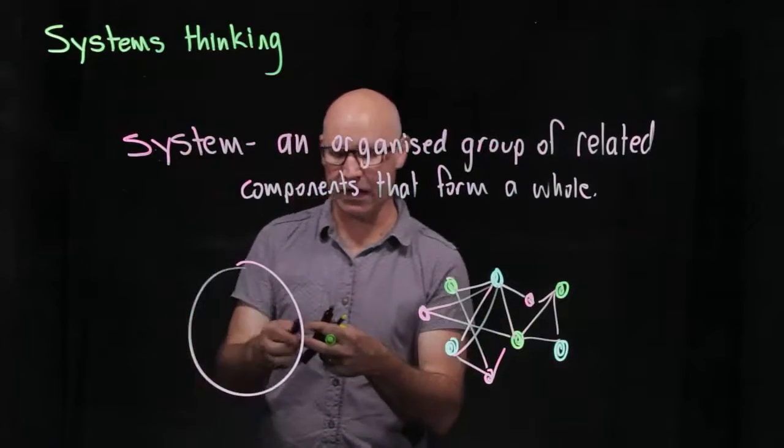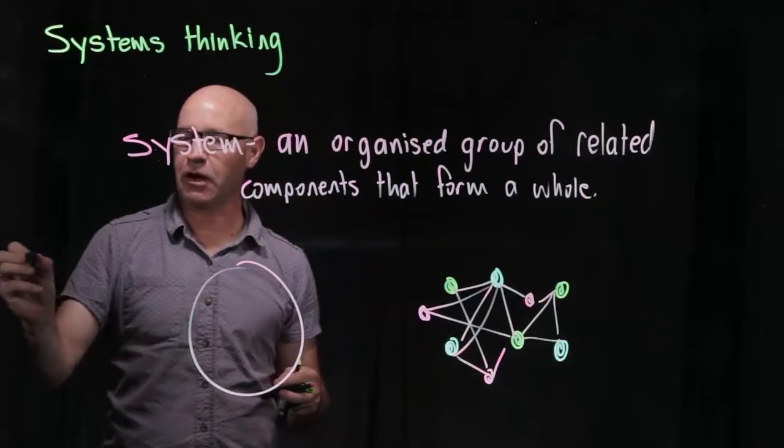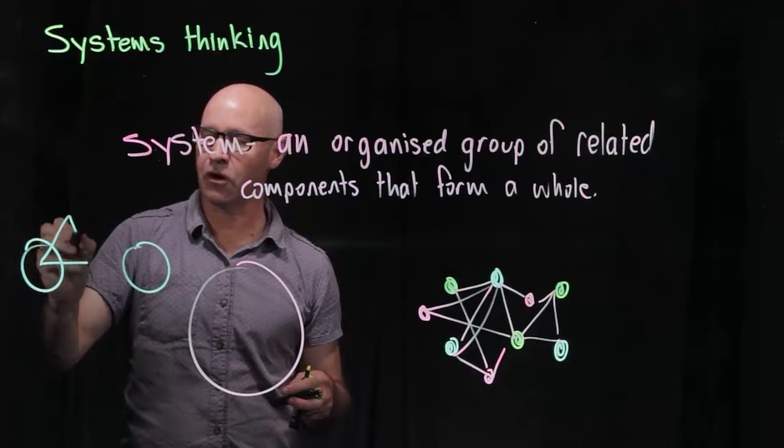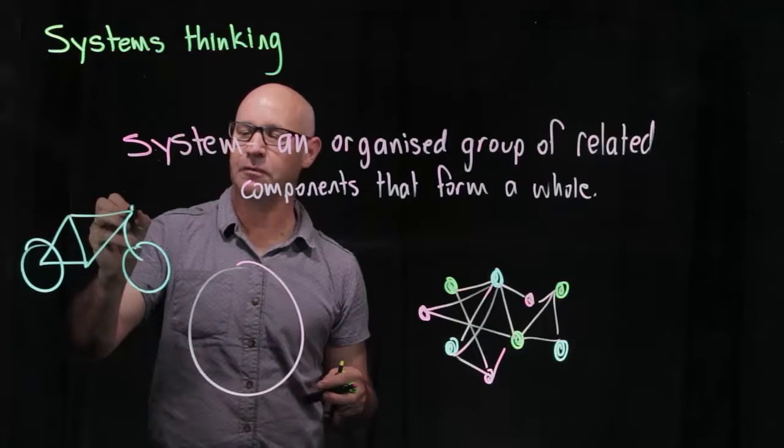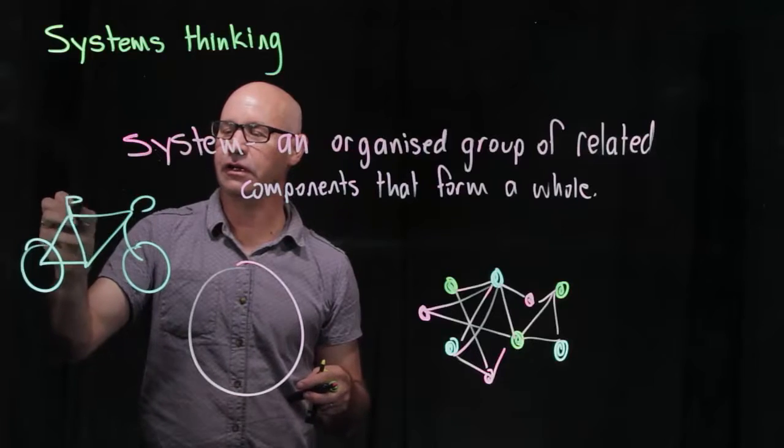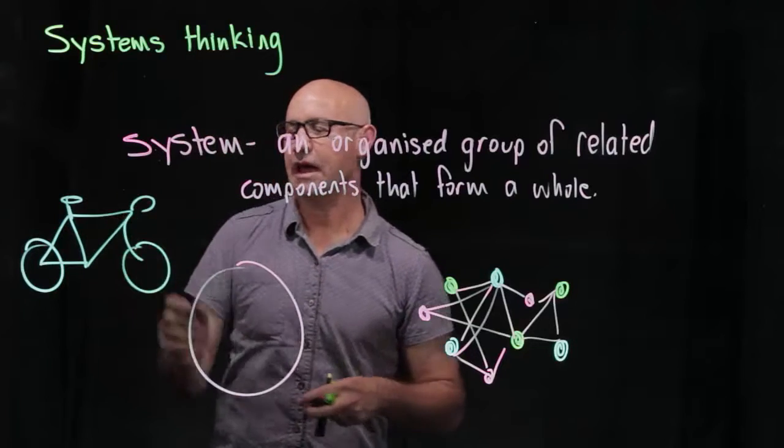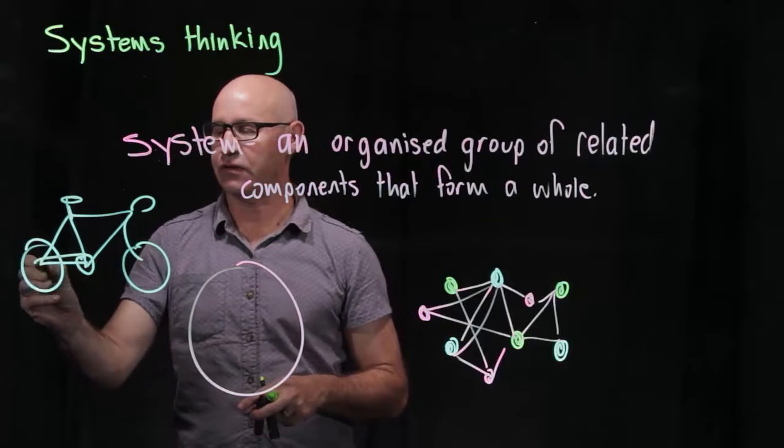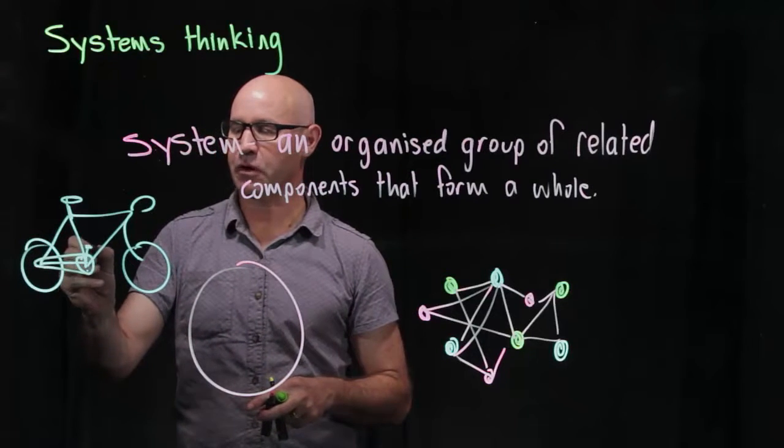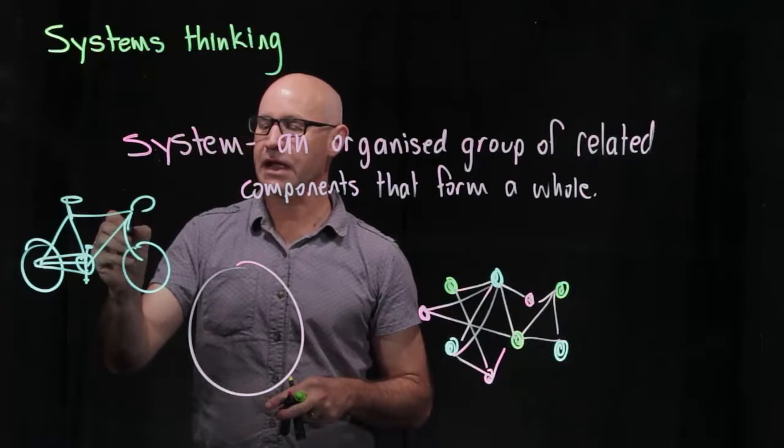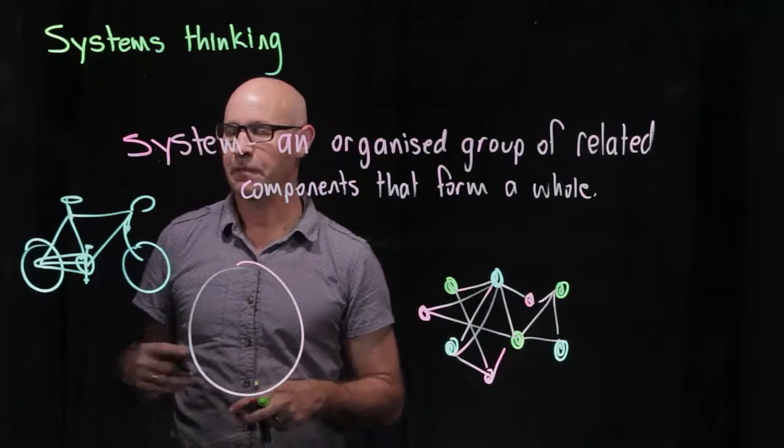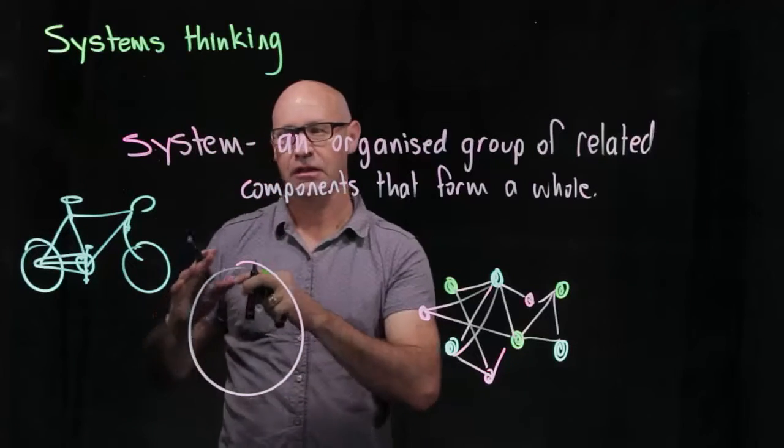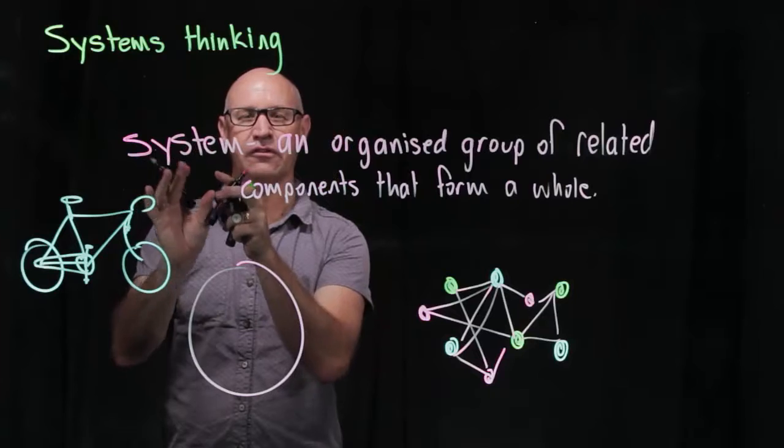Now a great example of a system is a bicycle. Within a bicycle we have a whole series of sub-systems. We have a steering system, we have a wheel system, we have a gear system that propels the bike forward, we have a braking system that slows the bike down. All of these things work together as the system of the bicycle.